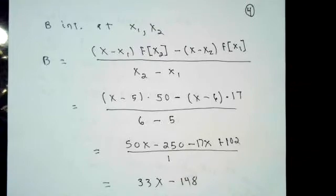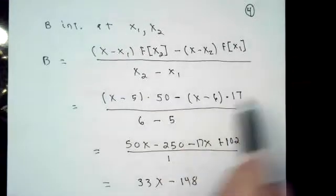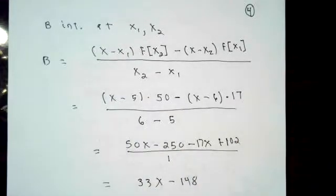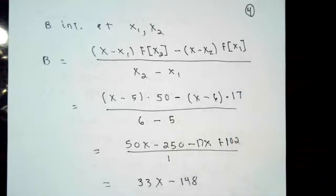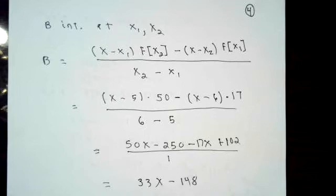Similarly, B is going to interpolate the data at x1 and x2. Writing down the information from the problem, you get a complicated-looking expression. f[x2] is just the function value at x2 and f[x1] is the function value at x1 — we know those numbers. After doing the algebra and simplifying, we get 33x minus 148.